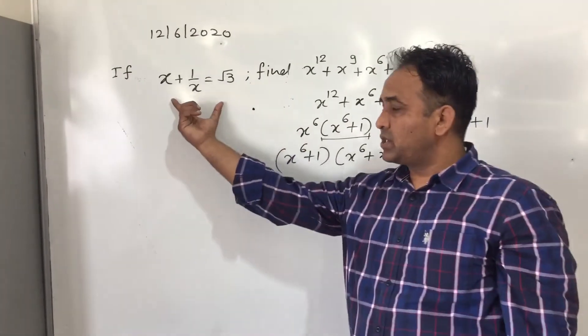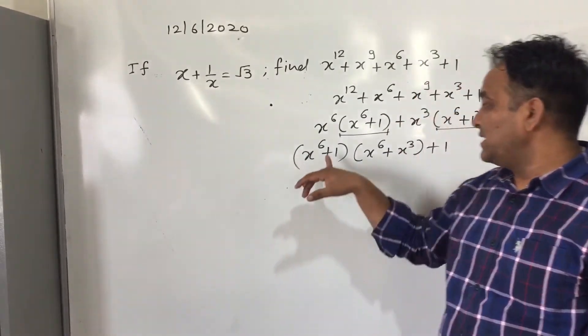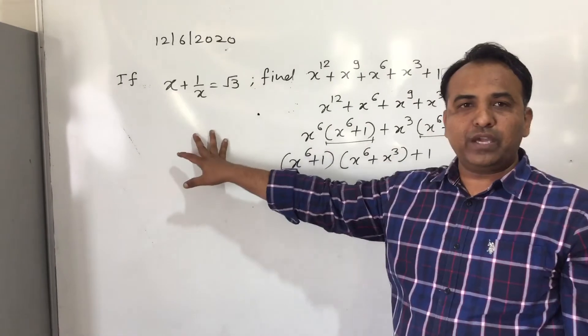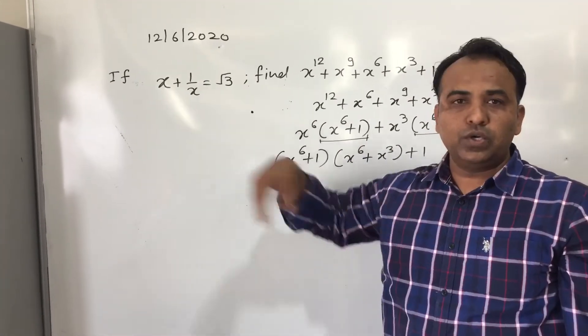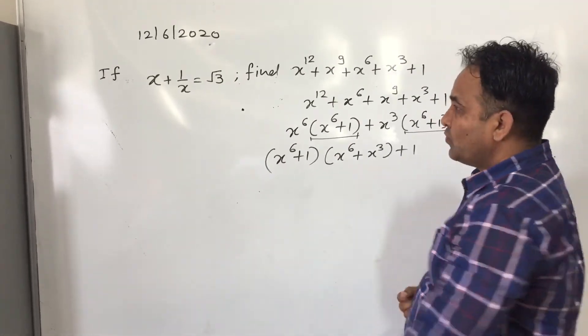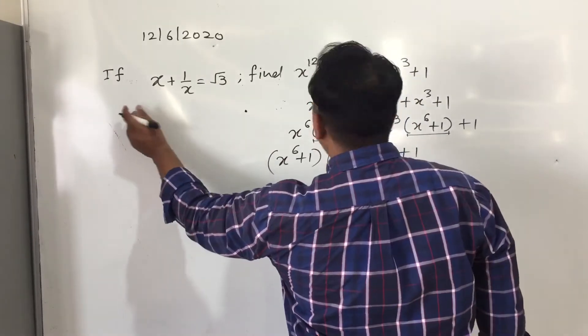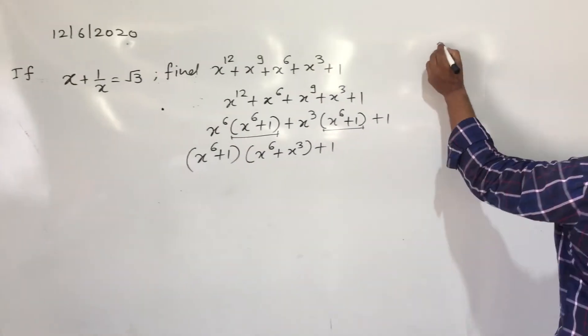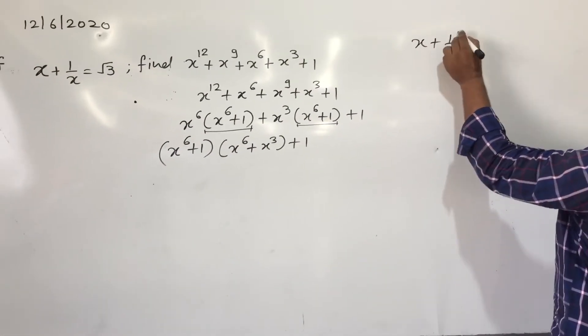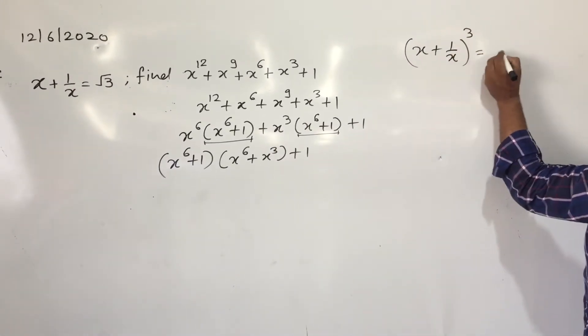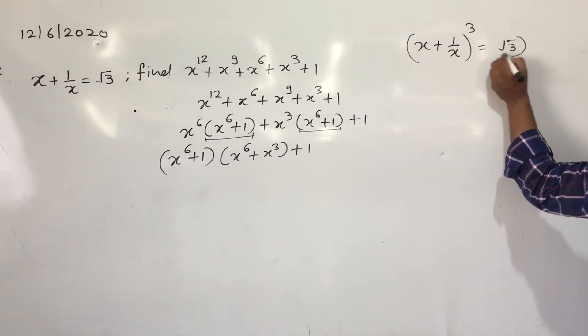So coming back to this, this is x whereas it is x^6. So how we can do, now we can do cubing both sides. So first of all, doing cubing both sides, what I will get, (x + 1/x)^3 = (√3)^3.